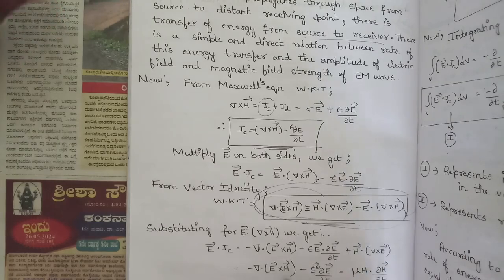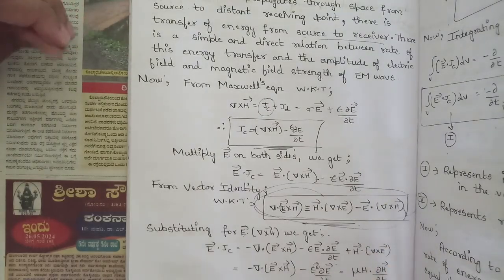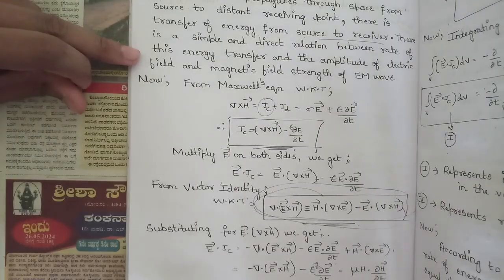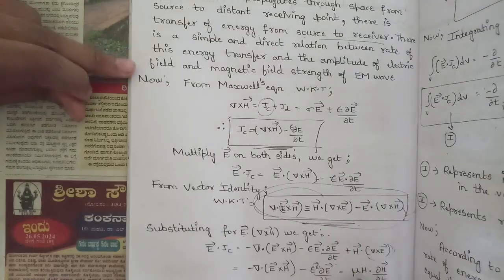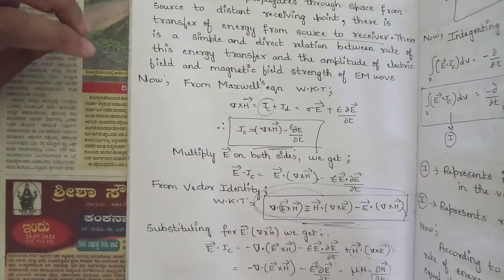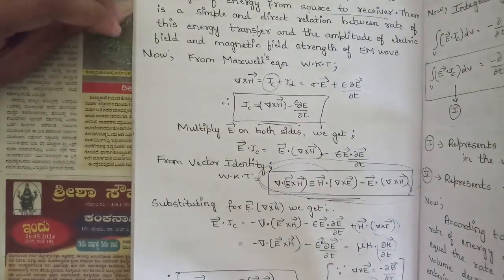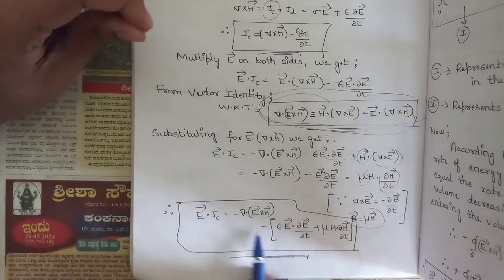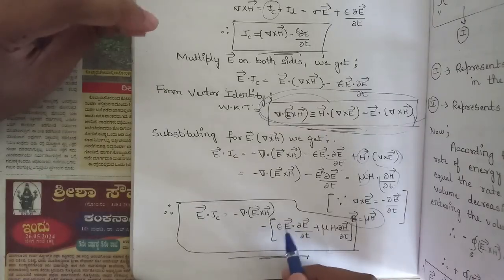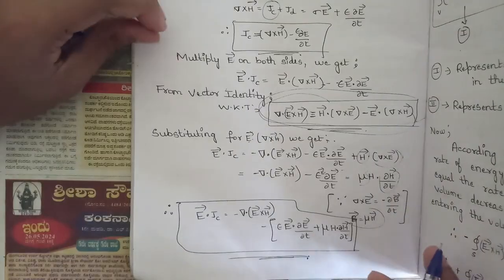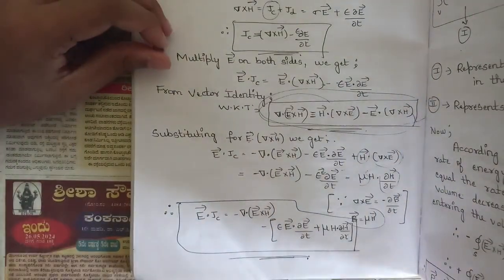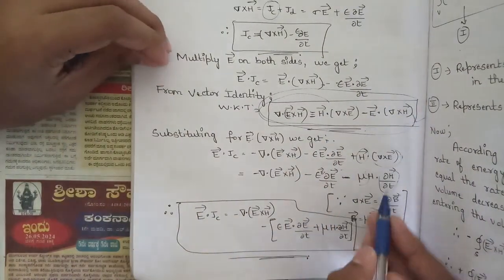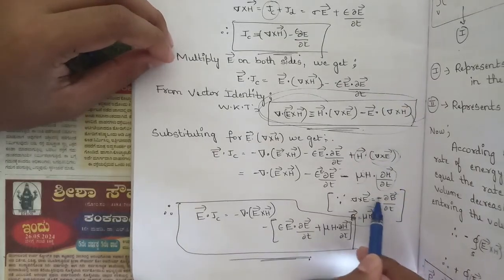Now, since ∇ × E = −∂B/∂t and B = μH, we replace ∇ × E with −μ(∂H/∂t). Substituting, E·Jc = −∇·(E × H) − ε·E·(∂E/∂t) − μ·H·(∂H/∂t). We have a minus sign here because ∇ × E = −∂B/∂t.